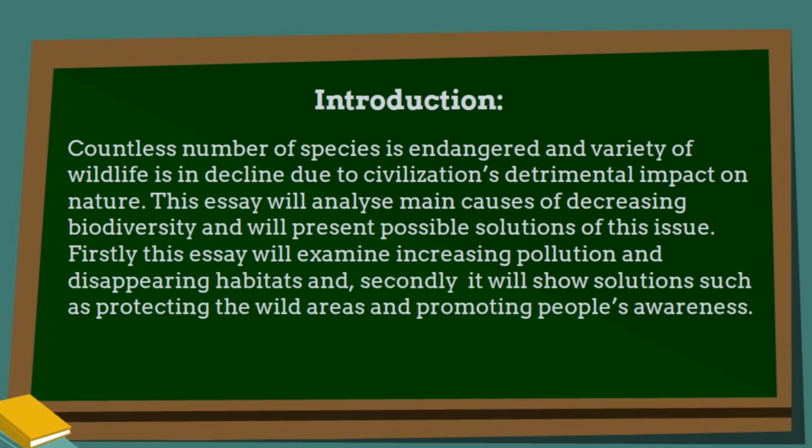Let's put it all together. Countless number of species is endangered and a variety of wildlife is in decline due to civilization's detrimental impact on nature. This essay will analyze main causes of decreasing biodiversity and will present possible solutions of this issue. Firstly, this essay will examine increasing pollution and disappearing habitats. And secondly, it will show solutions such as protecting the wild areas and promoting people's awareness. When writing the main body, you will show in the first body paragraph the causes — increasing pollution and disappearing habitats — and in the second body paragraph, the solutions: protecting the areas and increasing people's awareness.